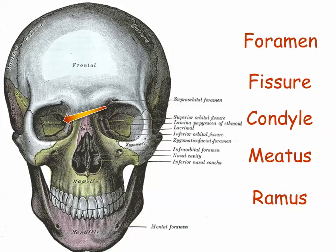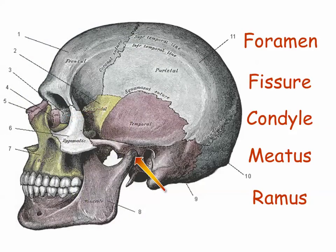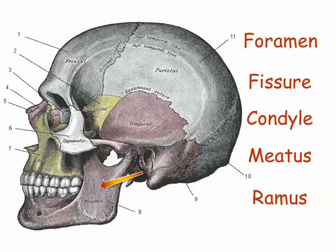If I know that a fissure is an elongated hole or crack, then finding the superior orbital fissure is not too hard at all. You can find the mandibular condyle — and later recall that its name is mandibular condyle — when you know that a condyle is a knuckle-like rounded bump that fits into a joint. A meatus is a tube-like opening, so the external acoustic meatus should be easy to find and remember. A ramus is a branching curve like a ram's horn, as in the curving ramus of the mandible. The terms listed here are frequently used in skeletal names, and if you know what they mean, it makes short work of finding all the parts you need to find and learning and remembering all these structures.